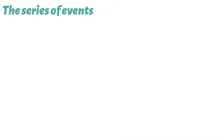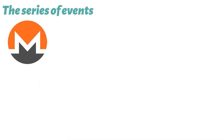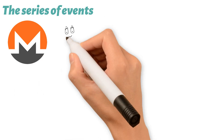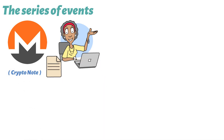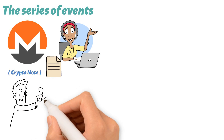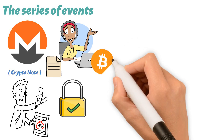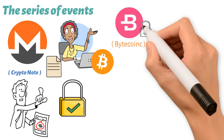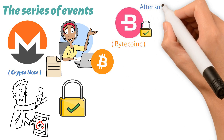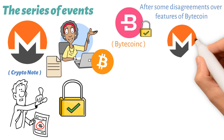The series of events that started in 2013 eventually culminated in the establishment of Monero. Software developer Nicholas van Saberhagen wrote a white paper-style essay called CryptoNote, in which he claims that the two most crucial features of electronic cash are privacy and anonymity. Several Bitcoin developers were drawn to the article and went on to build Bytecoin, the first privacy cryptocurrency. After some disagreements over features of Bytecoin, a fork known as Monero was established.